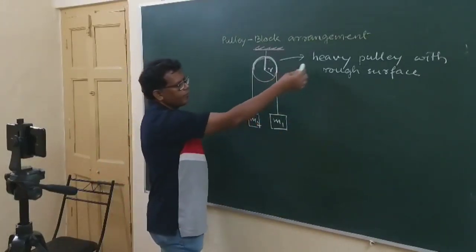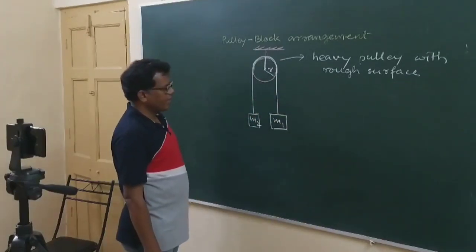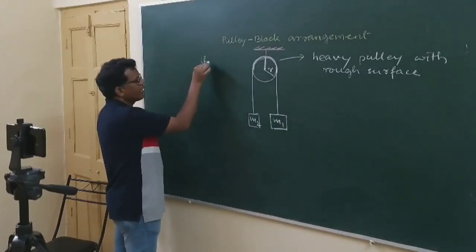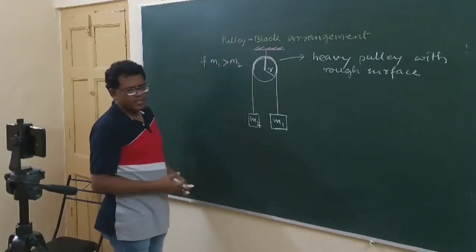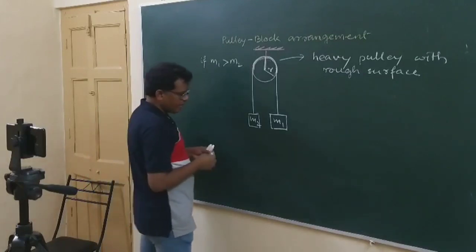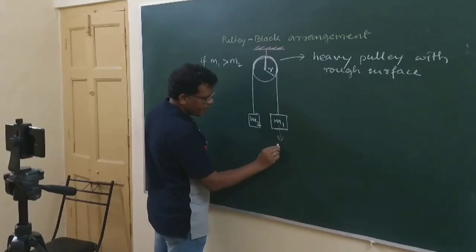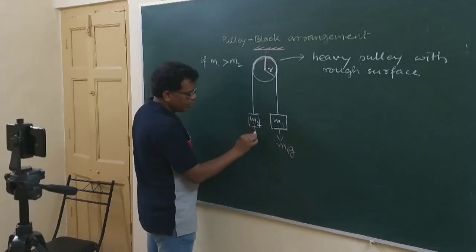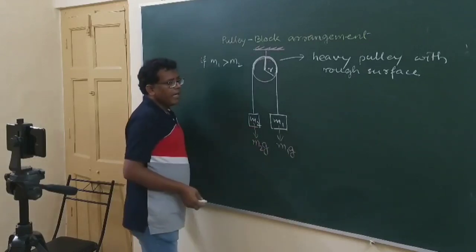As this heavy pulley has a rough surface of contact with the string, if we again consider the case where M1 is taken to be the heavier mass than M2, then obviously the free body diagram can be shown this way. M1 is having its weight M1G acting downward, and M2 is having its weight M2G acting downward.